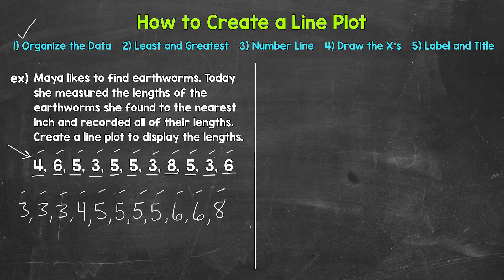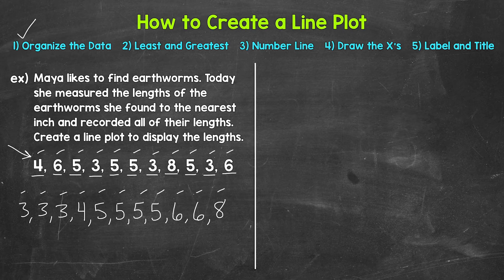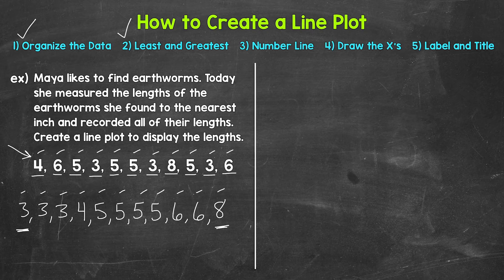Step two: we need to find the least and greatest number we are working with, so we can make a number line that fits all of our data. Since we're already in order from least to greatest, this is a quick step, but it's important because it determines how we write our number line. The least is three and the greatest is eight. Step two is done.